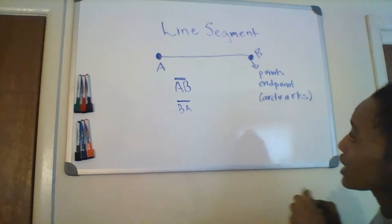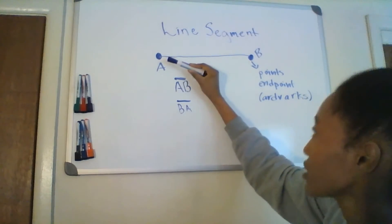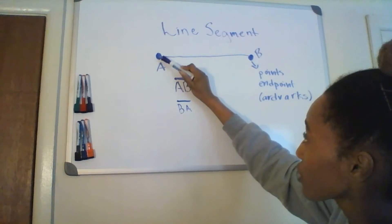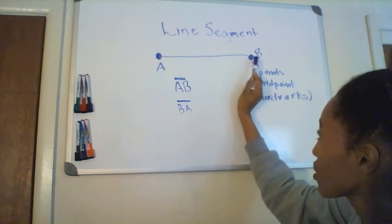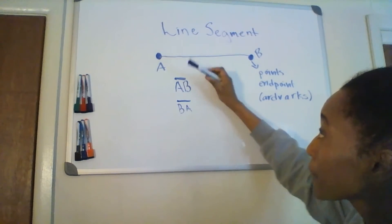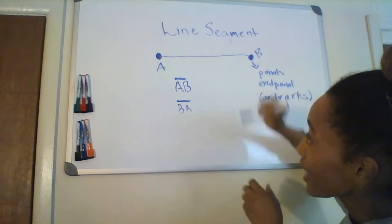So earlier I said a line segment is a one dimensional idea. You can travel back and forth from A to B, or from B to A, but a line segment technically has no width.